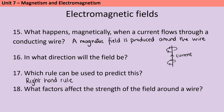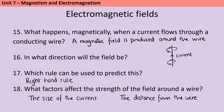The strength of the field around the wire will be controlled by two things. Firstly, the size of that current — the bigger the current, the stronger the magnetic field will be. And then also the distance from the wire. Just like with a bar magnet, the further you get away from that wire, the less of a magnetic force a magnetic object will experience.